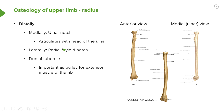We've got the radial styloid process and also the radial styloid notch. Most laterally, we also have what's known as a dorsal tubercle. This dorsal tubercle is important as it acts as a pulley for the extensor muscles of the thumb. We'll cover this in more detail when we look at the extensor muscles, as it allows various muscles to attach to the joint at a slightly different angle.